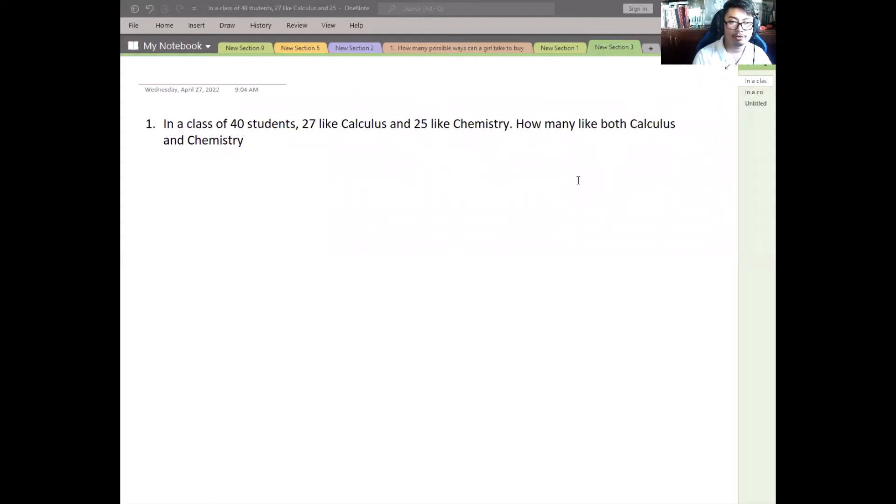We will solve this problem by using Venn diagrams. In a class of 40 students, 27 like Calculus and 25 like Chemistry. How many like both Calculus and Chemistry?